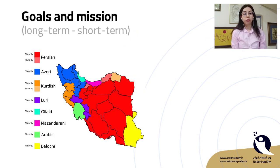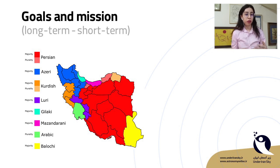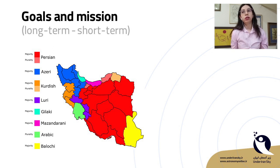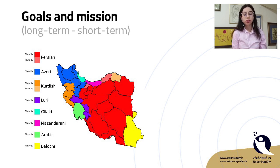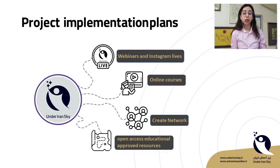The short-term mission is about spreading astronomy education in Iran during the pandemic. The long-term mission is expanding the project beyond Iran's borders and into different languages. For example, there are several languages spoken in parts of Iran and in neighboring countries, such as Turkish and Arabic, which we want to include in the project.